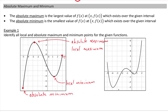Finally, we have this last point, which is not a local maximum because it does not change from increasing to decreasing, and it's not an absolute maximum — it is just an endpoint. Label the second graph on your own and then check your work.